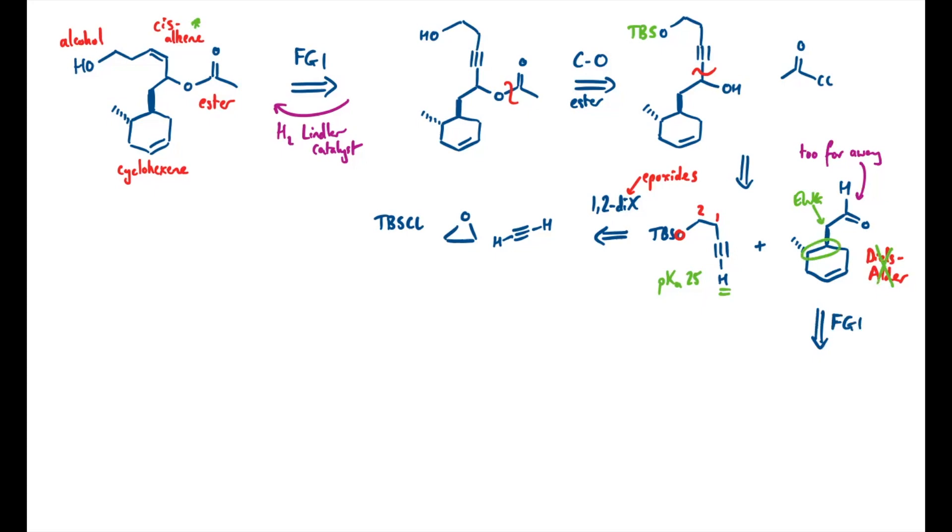So I'm going to do a functional group conversion here that's maybe not a particularly obvious one. I'm going to do what's called a homologation reaction, and that's where I'm going to take out a CH2 group in my disconnection, because I have a cunning way of putting that in later. That will take me back to this aldehyde, which is now perfect for a Diels-Alder type disconnection.